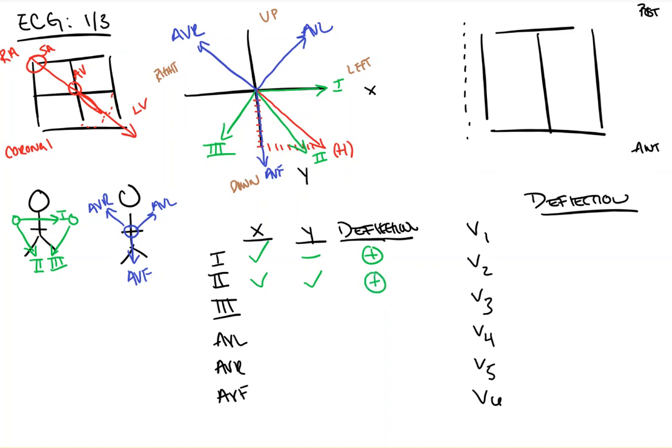Lead three, as you can see, the y components both go down. But the x component of lead three goes to the right, whereas the x component of the heart goes to the left. Therefore, the x components are different. And in this case, you will get an isoelectric deflection in lead three.